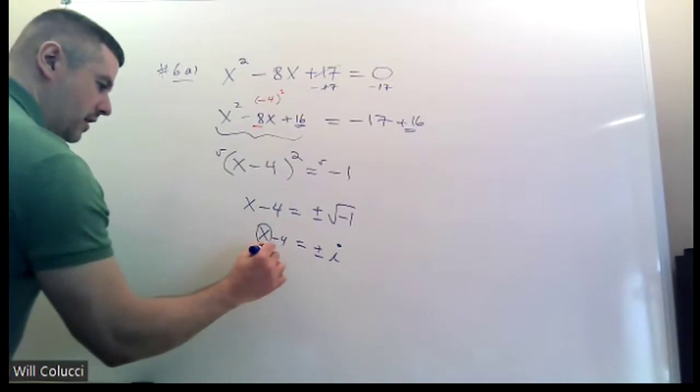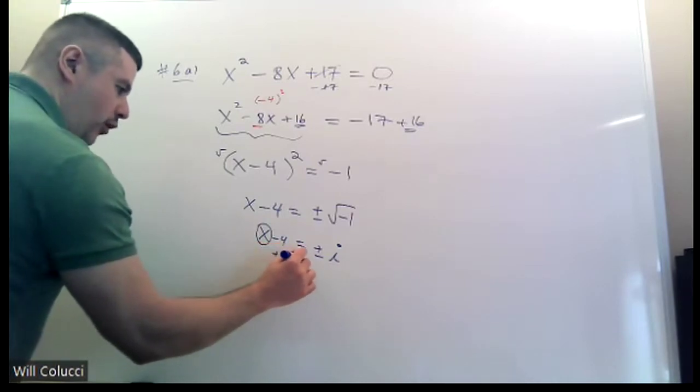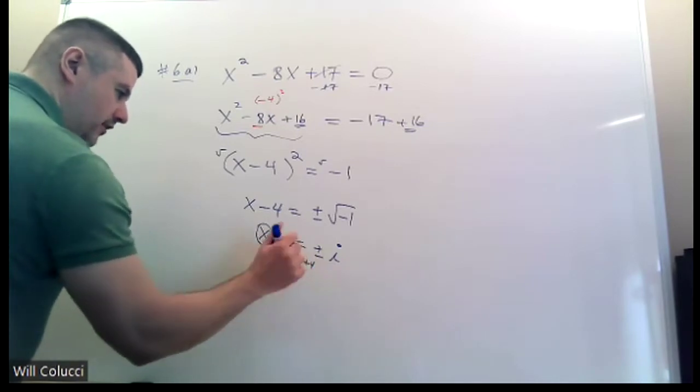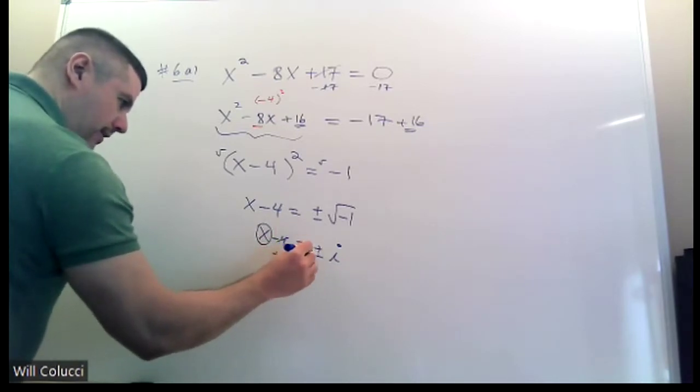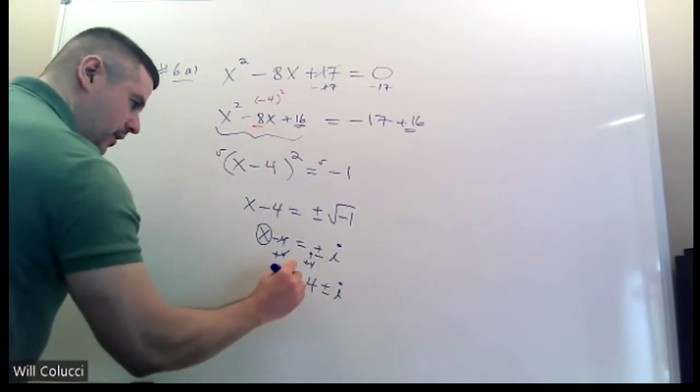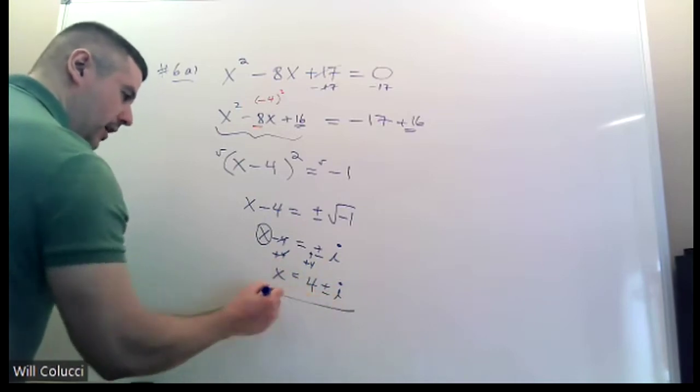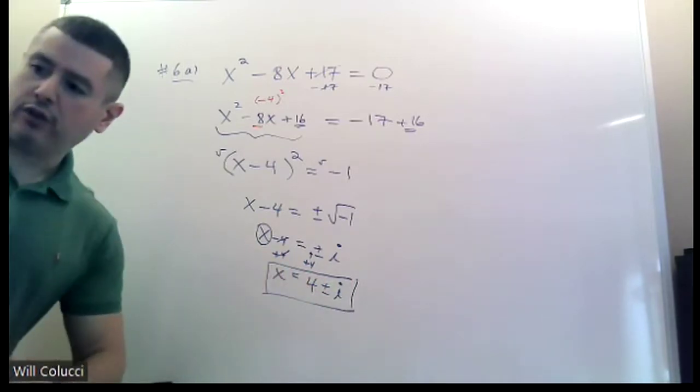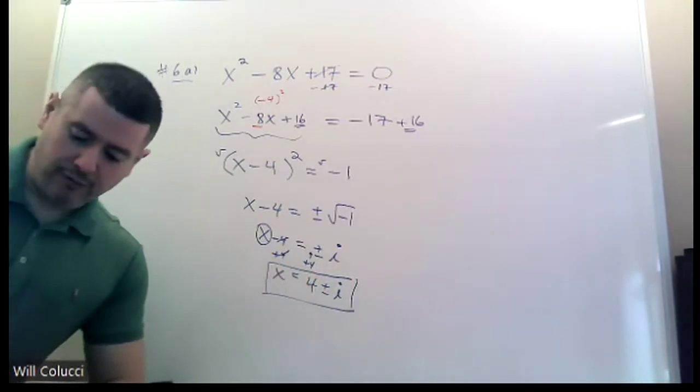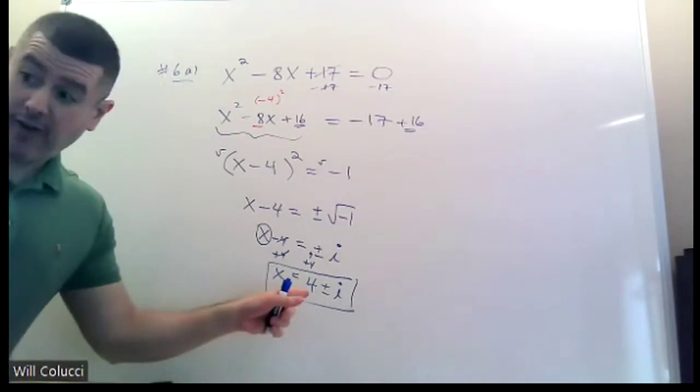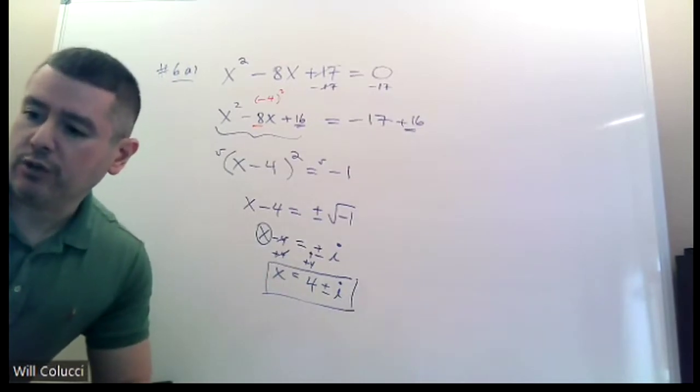But I need x all by itself. So I have to get rid of the number that's with it. So I'm going to add that 4 to both sides. But I have to be careful. I can't add 4 to this i. I always put it to the left of that plus minus. Okay? You have to put it to the left of the plus minus. You cannot do anything else with this. You cannot add. I mean, you have 4 plus i, 4 minus i, but those aren't like terms. The number 4 and i are completely different creatures. So you can't add them together and make this 5i or whatever. This is all you can do.